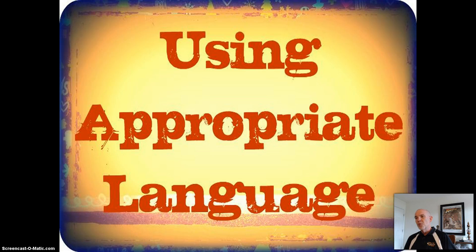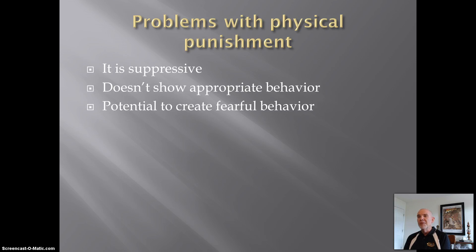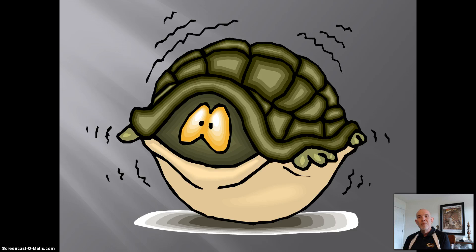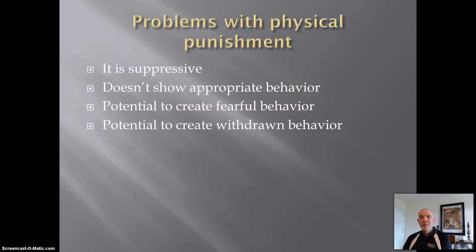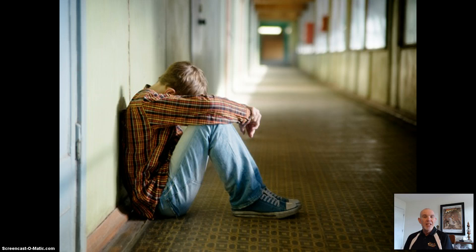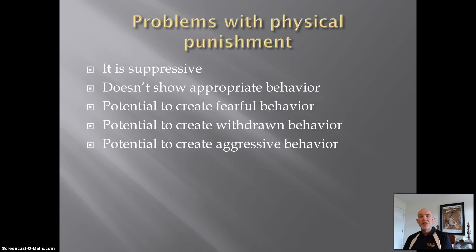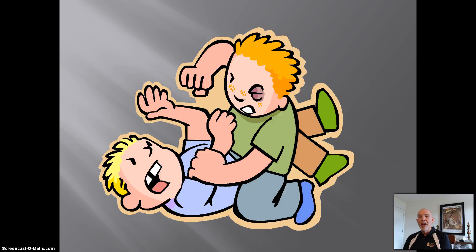A child learns what not to do, but he or she may truly not know what to do — such as how to express anger without swearing. Physical punishment can result in a person becoming fearful; the child may begin to experience anxiety or want to escape or run away. Physical punishment can create withdrawn behavior — the child may become disengaged and alienated from parents and others. And finally, physical punishment can lead to aggression, as children frequently rely on what they observe at home to be normal, and the child may learn that physical aggression is the best way to solve problems.